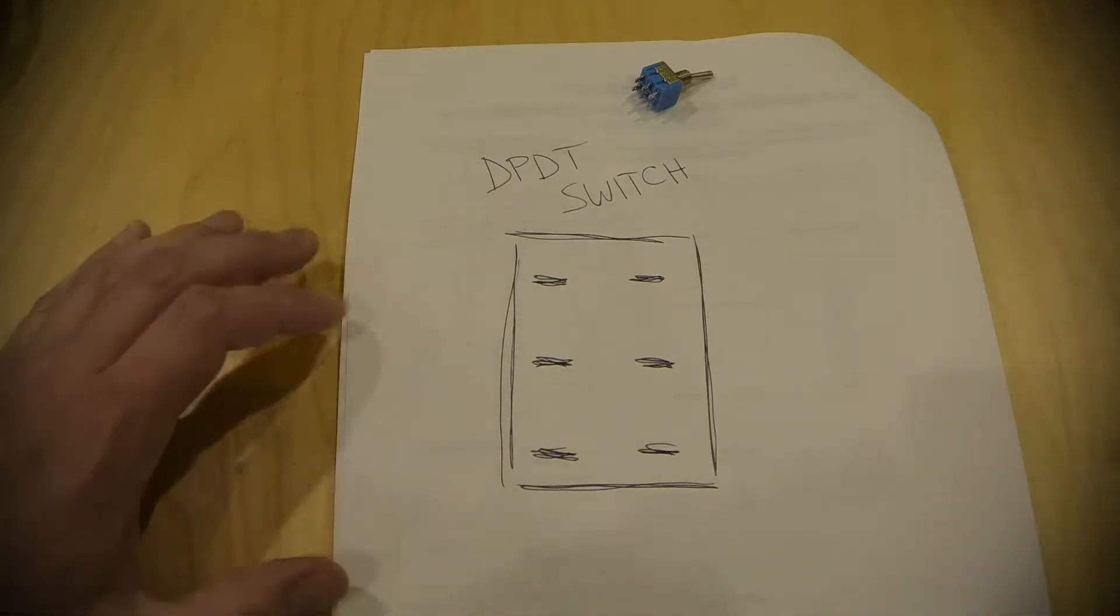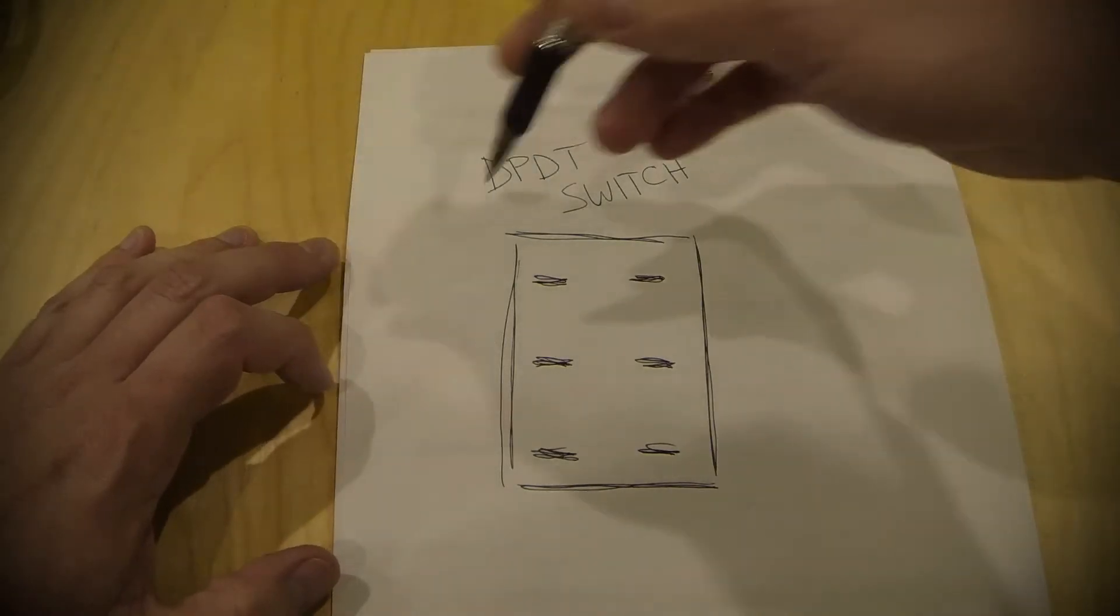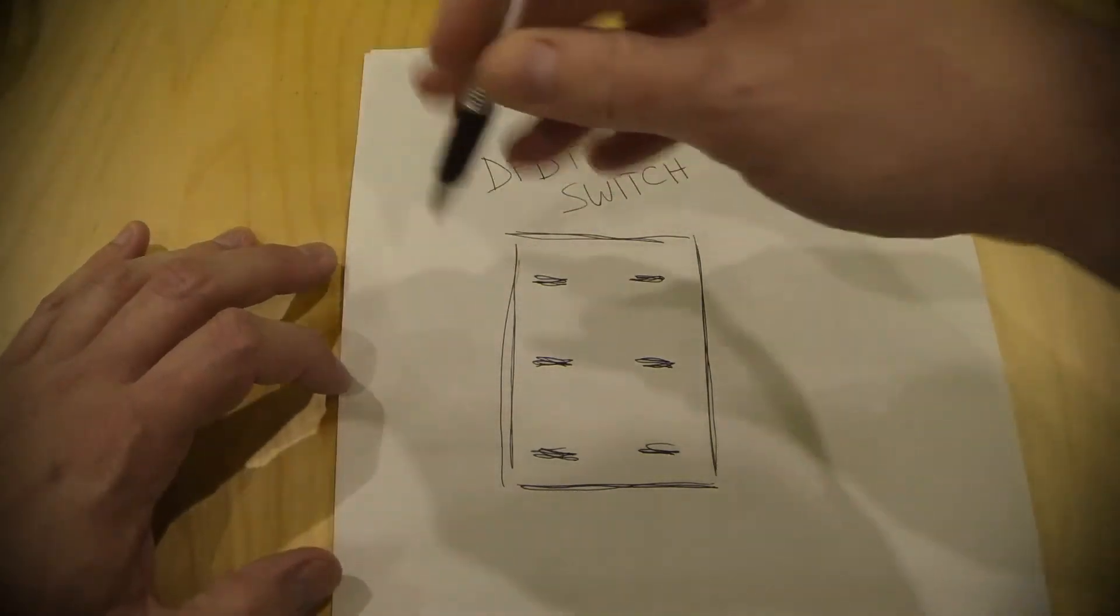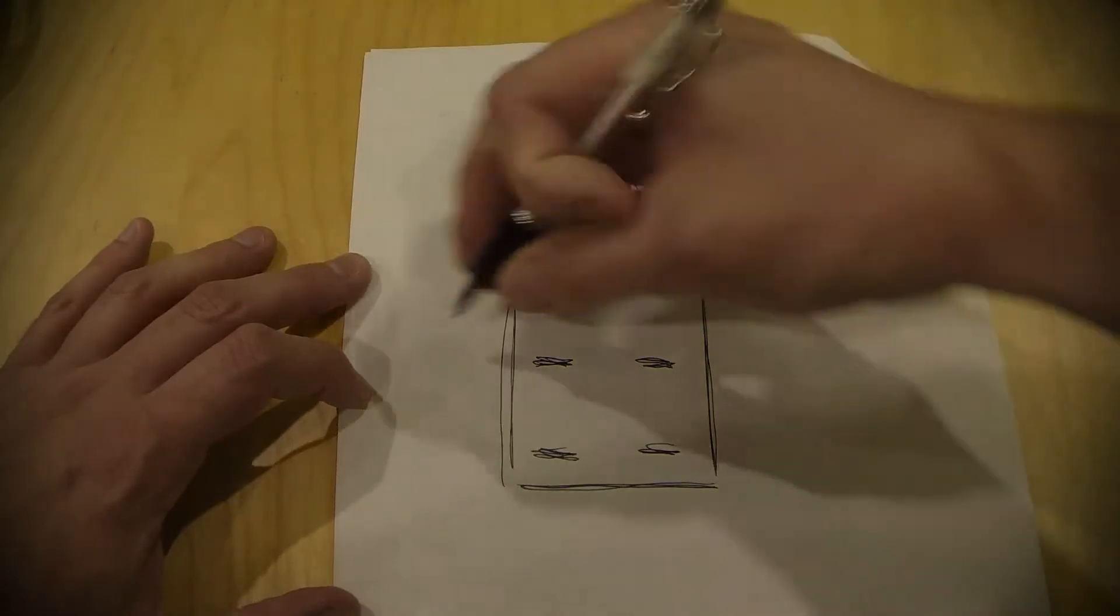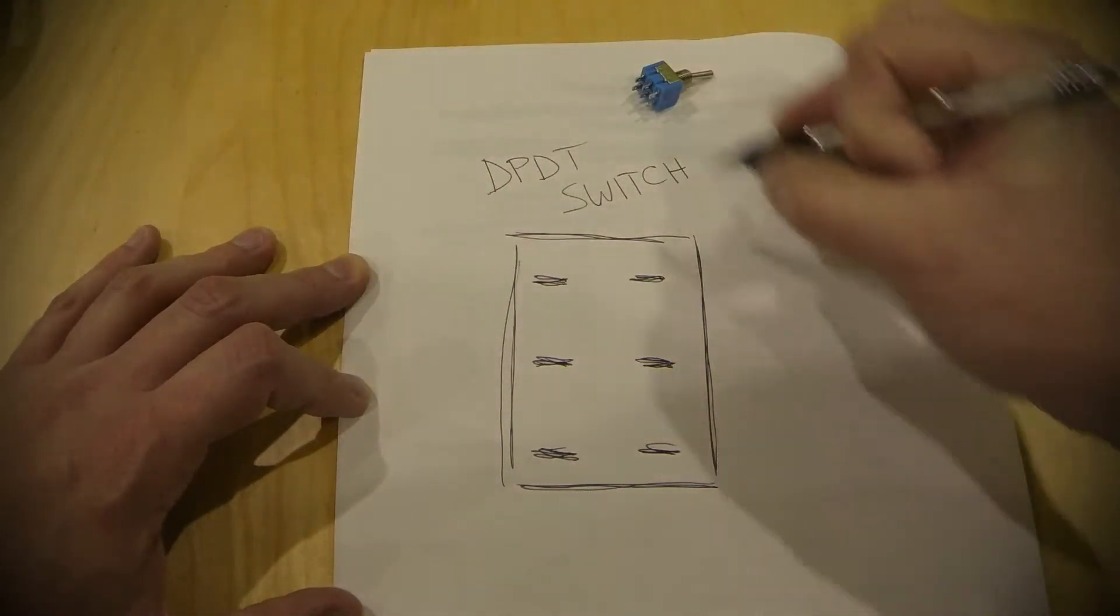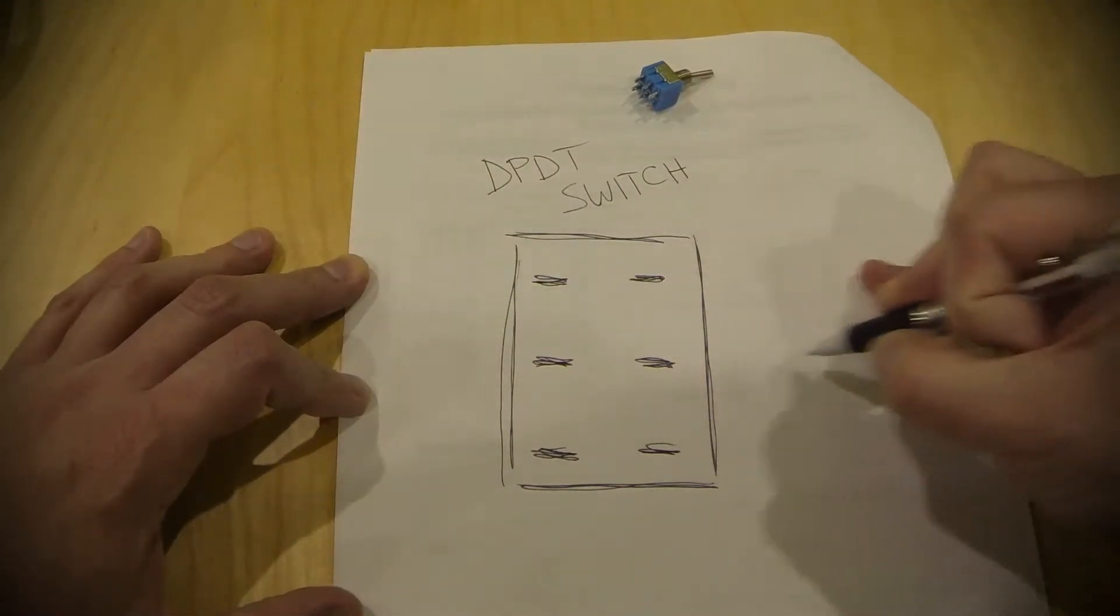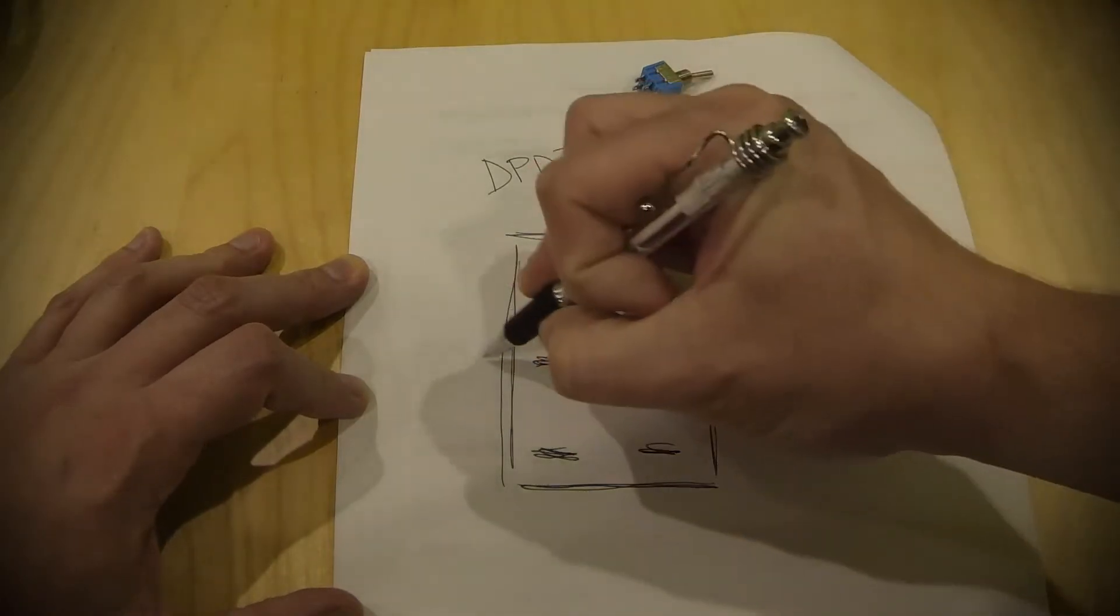So, in order to do that, basically you've got two pickup wires and this could be a humbucker, start and finish of the series, or it can be a single coil, either way. And you bring those in on your dual-position, dual-throw switch. You're going to connect those two wires.